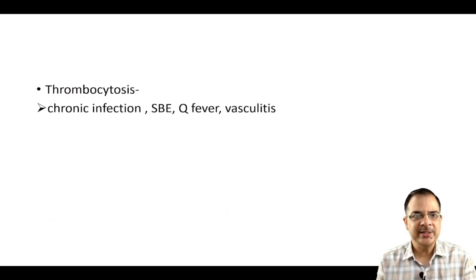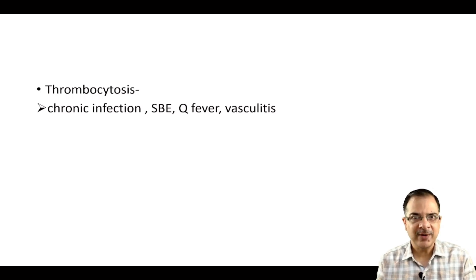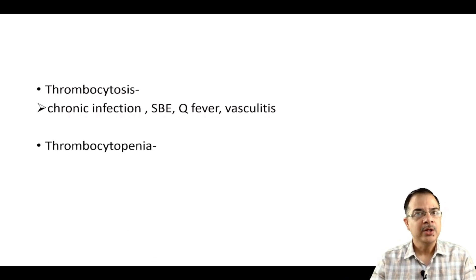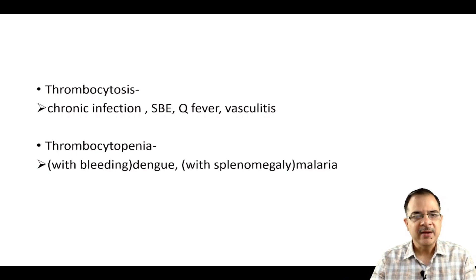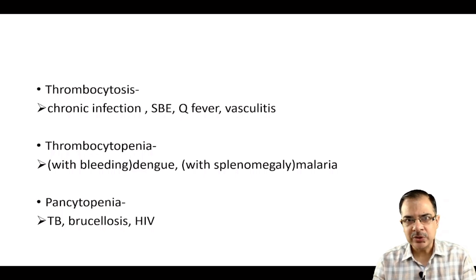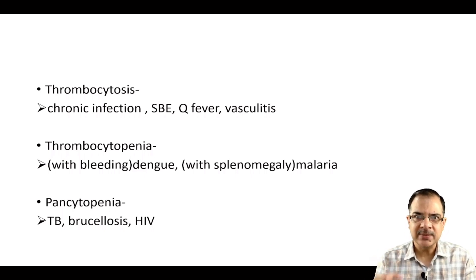Thrombocytosis is an acute phase reactant seen in chronic infections, subacute bacterial endocarditis, Q fever, vasculitis, and tuberculosis — in TB the platelet count is often very high. Thrombocytopenia is most obviously caused by dengue fever with bleeding and splenomegaly, and can also be seen in malaria. Pancytopenia — all cell counts low — is seen in tuberculosis, brucella, and HIV, because these infections suppress the bone marrow.